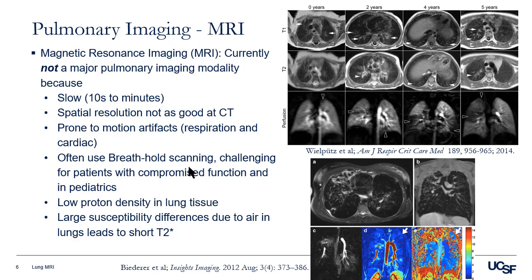Breath-hold scanning is the norm for a lot of imaging, but that's pretty hard for some respiratory patients and kids of course. We also have physical limitations: the lung tissue itself has a relatively low proton density, which is problematic for SNR if we want to observe the lung parenchyma. And susceptibility differences between lung tissue and air give us short T2* values, which make imaging hard.